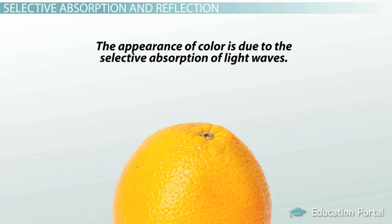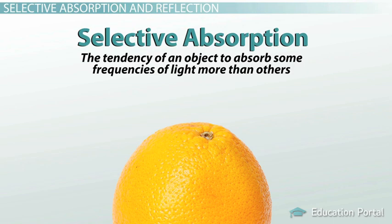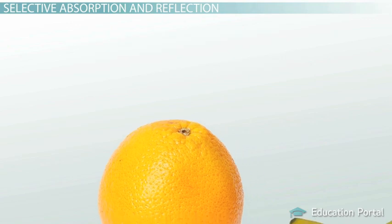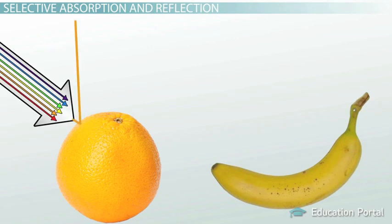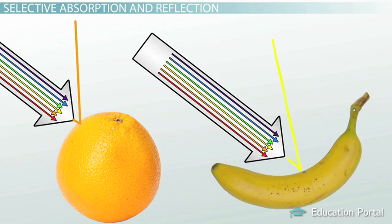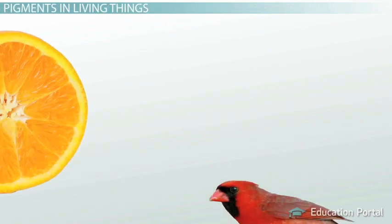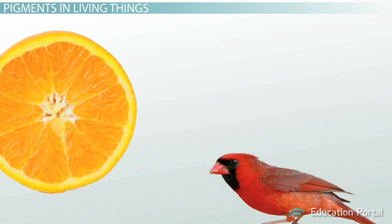The appearance of color is due to the selective absorption of light waves. Orange wasn't the only color to be beamed down on the fruit, but it was the only color to be reflected. Selective absorption describes the tendency of an object to absorb some frequencies of light more than others. An object that appears a certain color reflects the light frequency that corresponds to that color, and it absorbs all the other frequencies in the visible light spectrum. An orange absorbs all of the frequencies but orange. A banana absorbs all of the frequencies except for yellow.